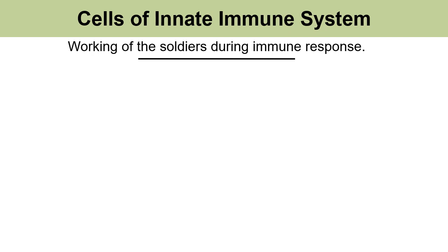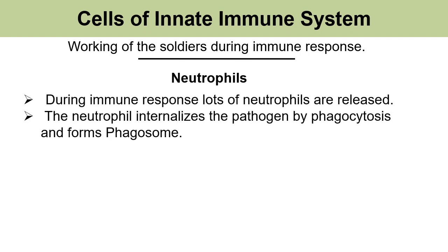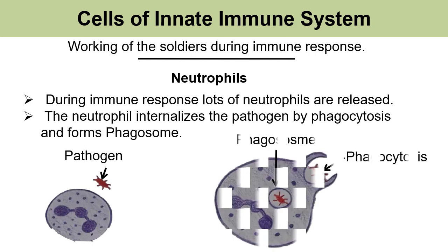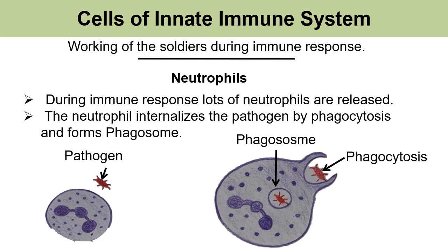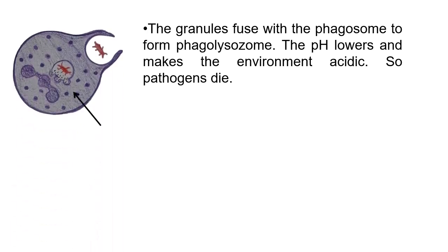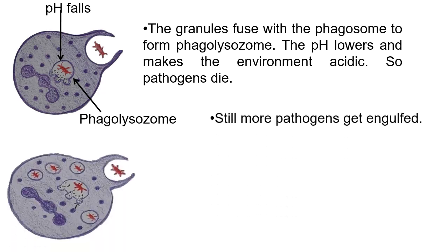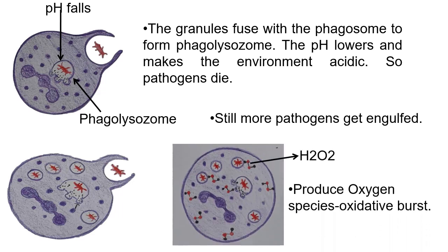Let us see how the cells of the immune system act to combat infection, starting with the cells of the innate immune system — first, neutrophil. During immune response, lots of neutrophils are released. The neutrophil internalizes the pathogen by phagocytosis and forms the phagosome. The granules fuse with the phagosome, and molecules from the granules lower the pH and make the environment acidic, killing certain pathogens. The neutrophil continues engulfing more pathogens, producing oxygen-rich species such as hydrogen peroxide, which destroys nearby proteins and nucleic acids, ultimately killing the neutrophil — but by this time it has already killed many pathogens.